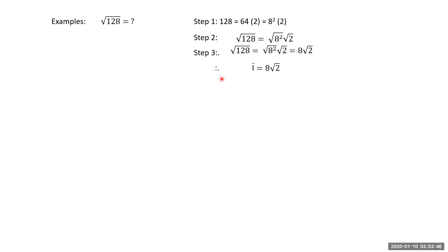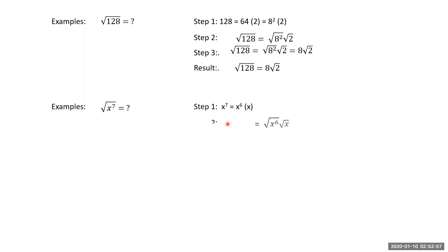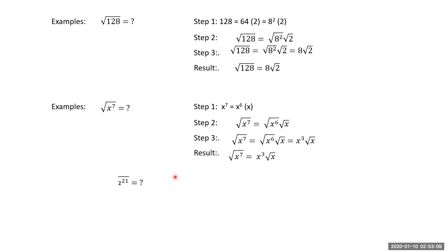For root of x to the power 7: since 7 is odd, the largest perfect square is x to the power 6. Apply the product rule: root of x⁶ × x = x³ × root x. So x³ times root x is the answer.